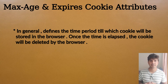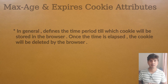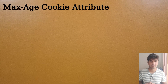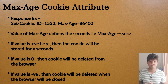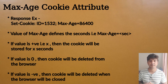Now let's discuss the max age cookie attribute and the expires cookie attribute one by one. First of all, we have the max age cookie attribute, which contains a numeric value. Based on that numeric value its functionality can vary. In its general form the numeric value defines seconds.